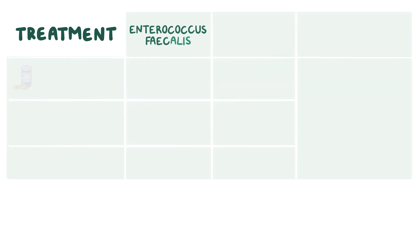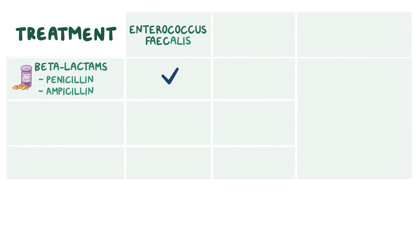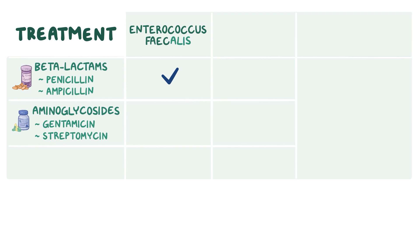Treatment for infections caused by Enterococcus faecalis is usually done with beta-lactams like penicillin or ampicillin, or aminoglycosides like gentamicin or streptomycin. Resistant strains can be treated with vancomycin.